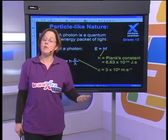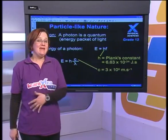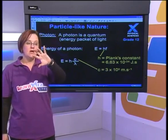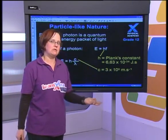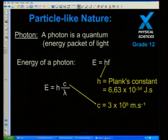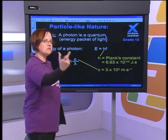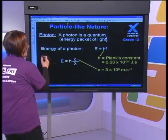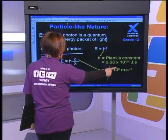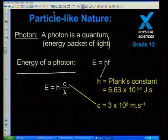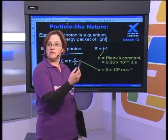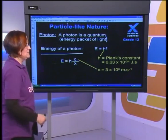Remember: if light has a particle nature, then any part of the spectrum has a particle nature — it's all part of the same spectrum. A photon is a quantum — an energy packet of light. Photons are quantized; they come in discrete packets in multiples of Planck's constant. The energy of a photon is E = hf, where h = 6.63 × 10⁻³⁴ J·s, times frequency. Or alternatively: E = hc/λ.